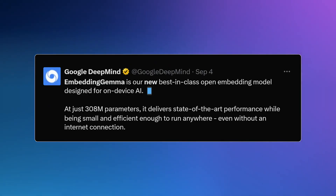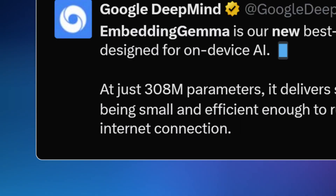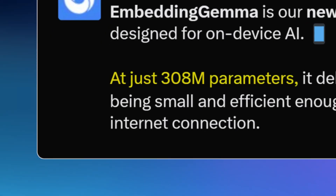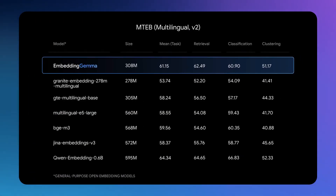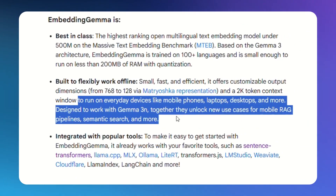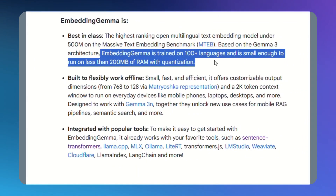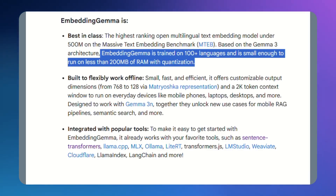Google just released something nobody saw coming — it's called Embedding Gemma. This model has only 308 million parameters. That's tiny, but it performs better than models with 600 million parameters. Most AI models need the cloud, need internet, need massive servers. Embedding Gemma runs on your phone, on your laptop, completely offline. It uses less than 200 megabytes of RAM — smaller than most photos on your phone — but it can understand over 100 languages, search through documents, and does all of this in 15 milliseconds.